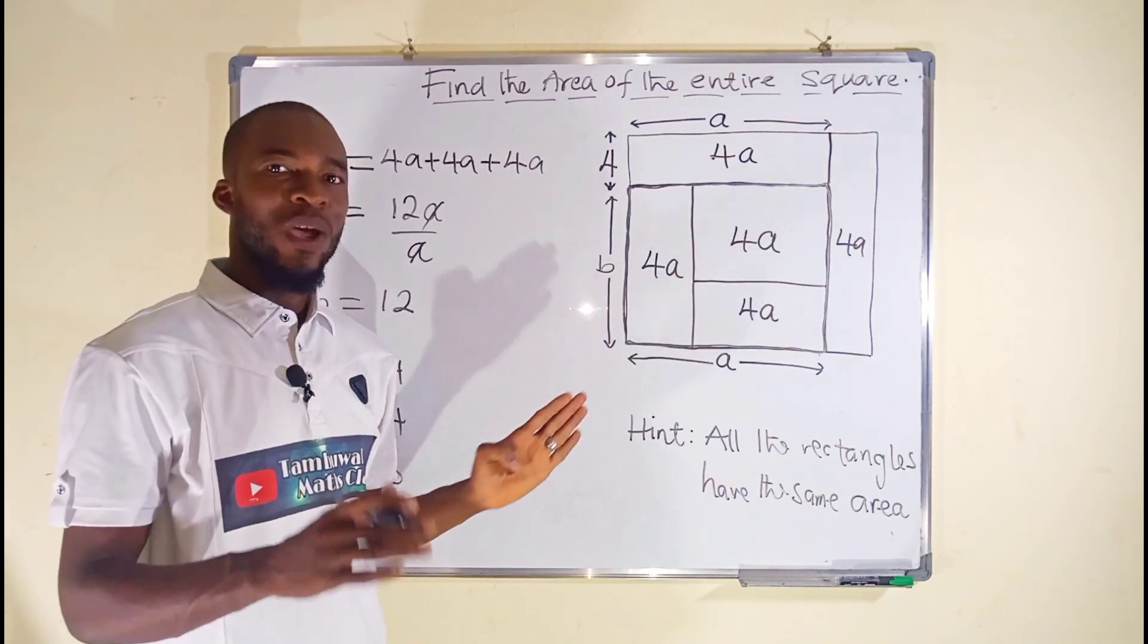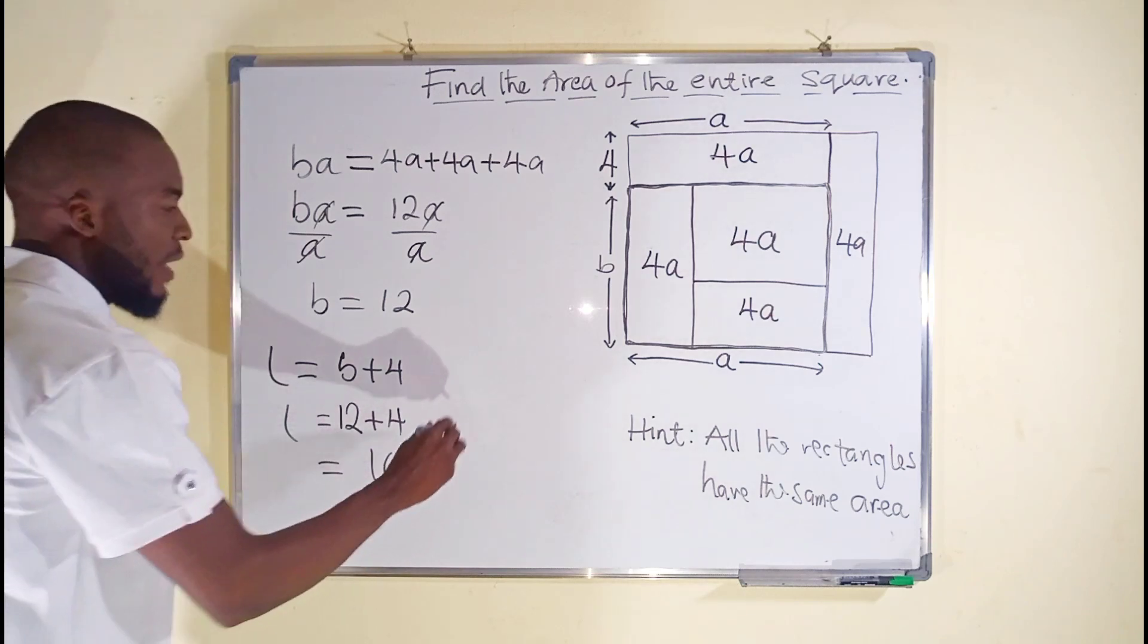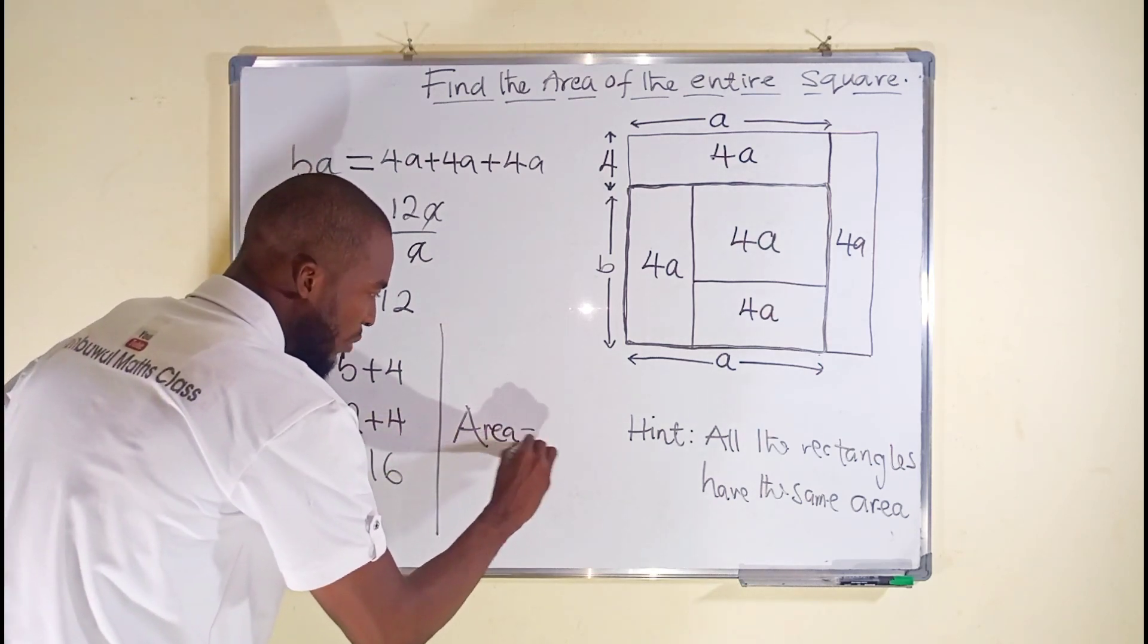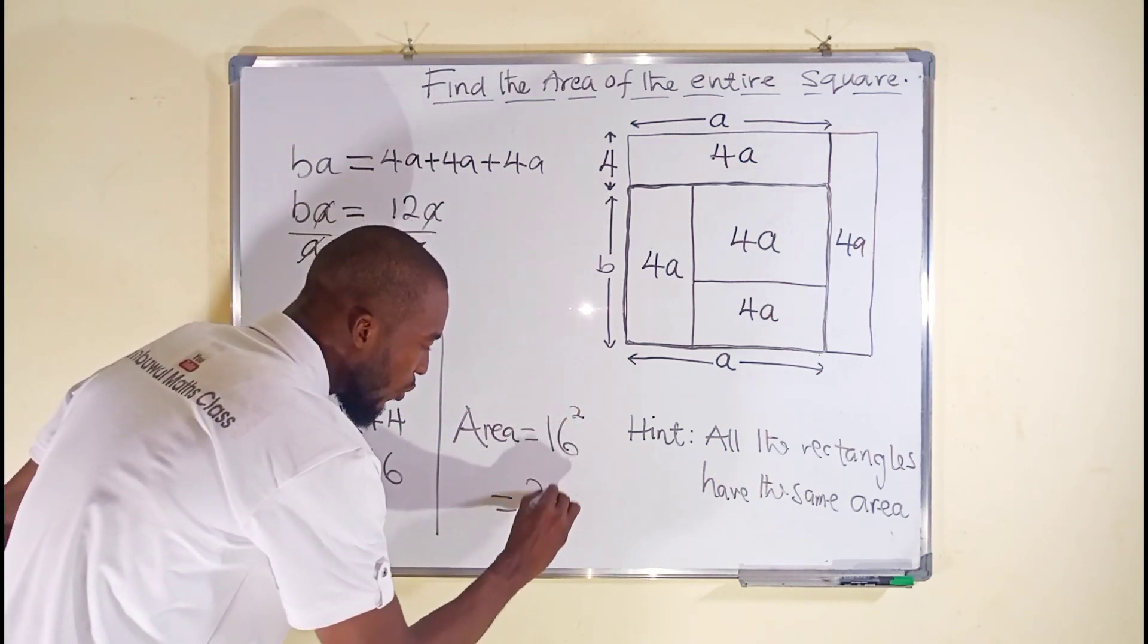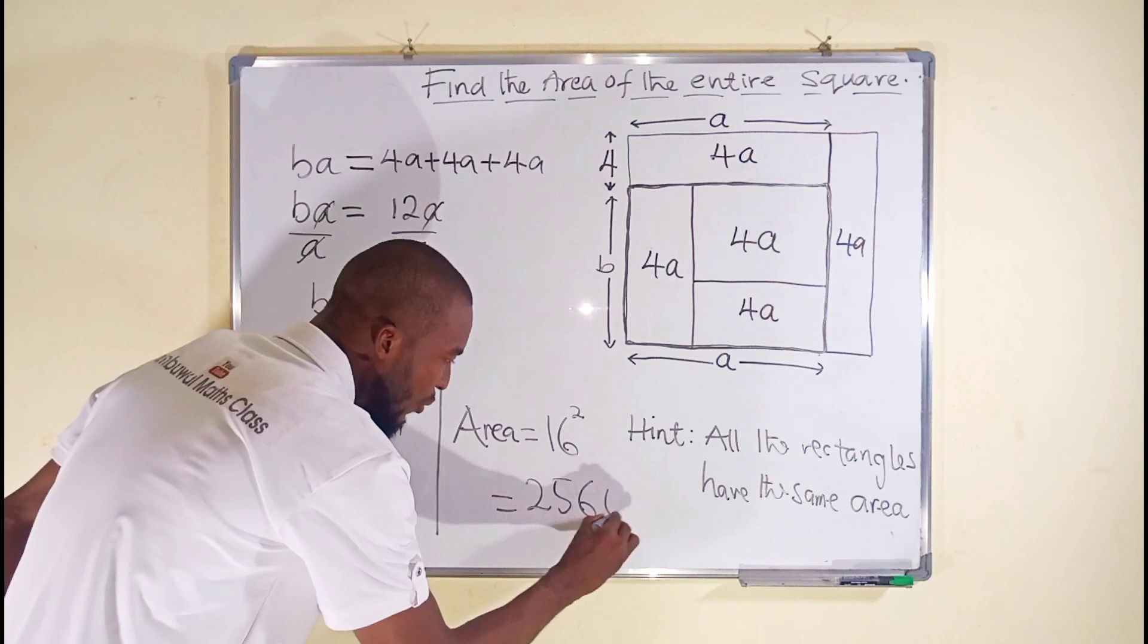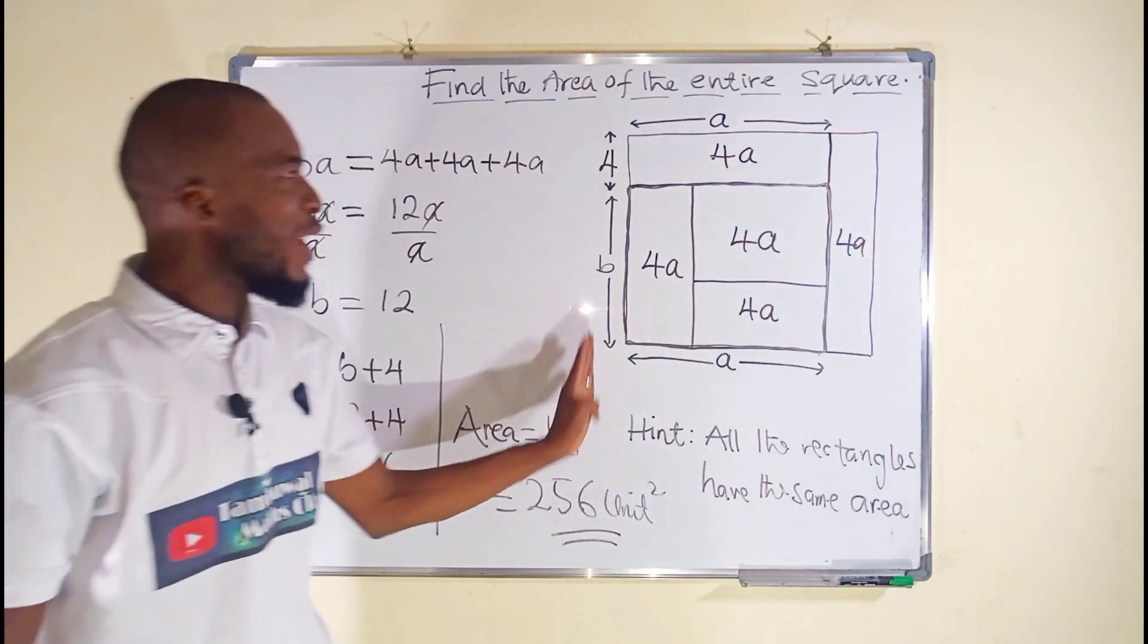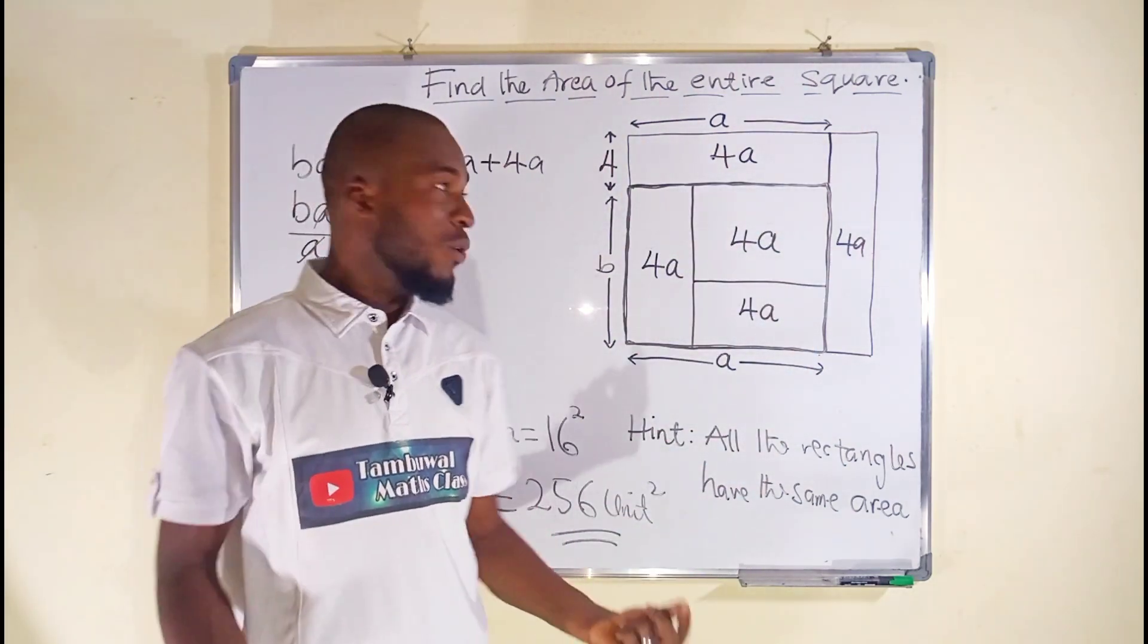Now to find the area of this square, all we have to do is square 16, and the area finally will be equal to 16 squared, which is equal to 256 unit squared. Therefore, the area of this square is 256 units squared, because the unit is not given to us, so we can just write unit squared as the unit of an area.